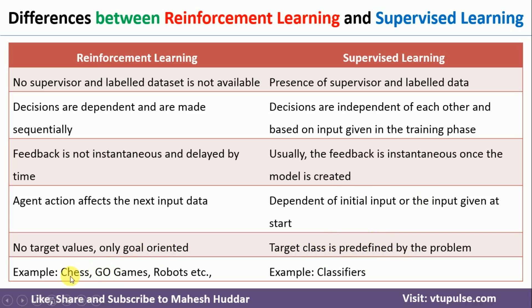Examples of reinforcement learning include implementing or designing a chess or Go game, as well as designing robots. When it comes to supervised learning, we can use it for classification problems — for example, classifying whether an object is X or Y, detecting a particular object, or detecting a face. In such applications, supervised learning is used.